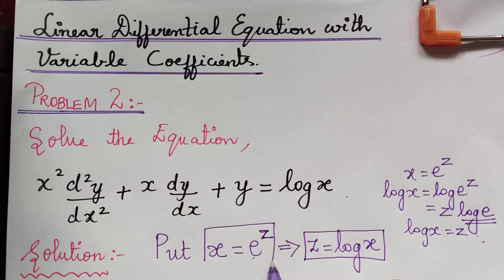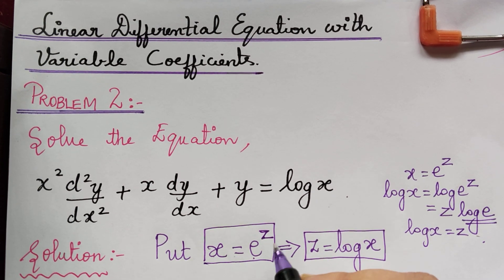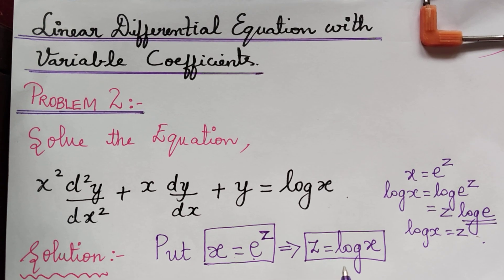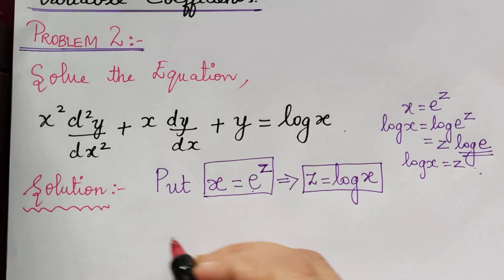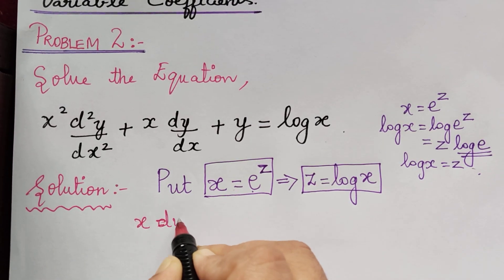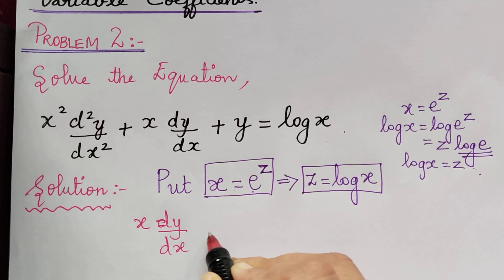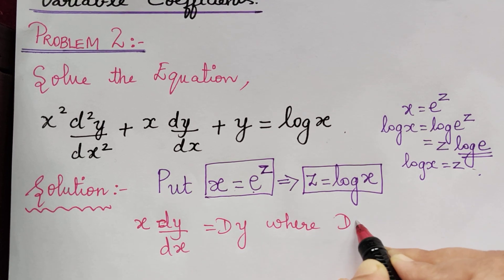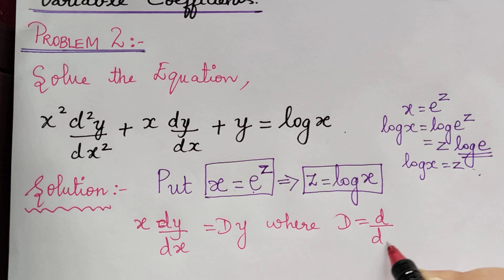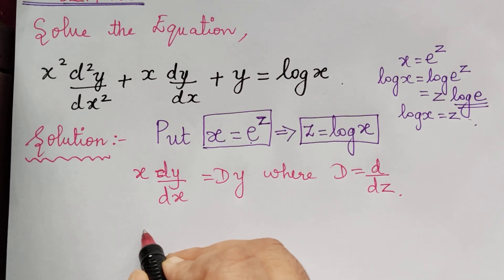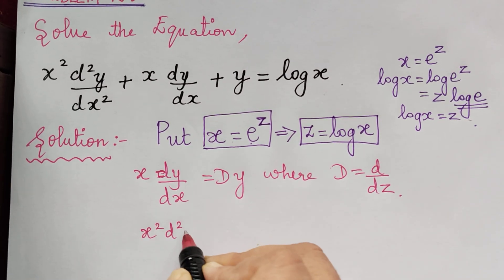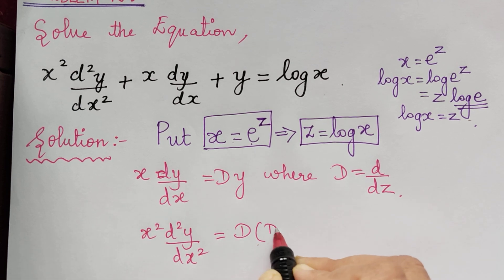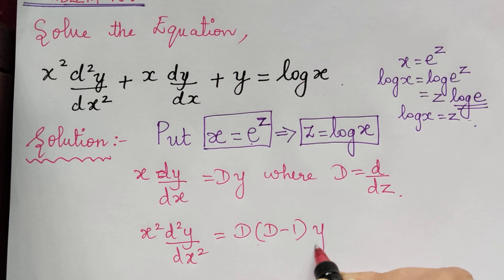After making this substitution, we also put x times dy by dx equal to capital D of y, where capital D equals d by dz. And x squared d squared y by dx squared will be equal to D times (D minus 1) of y. We are going to apply all these substitutions in our given equation.